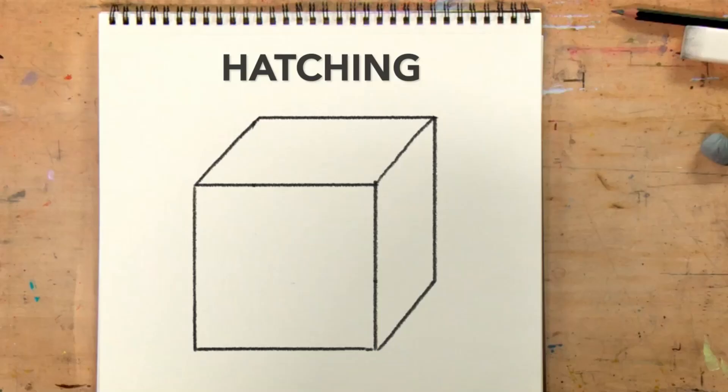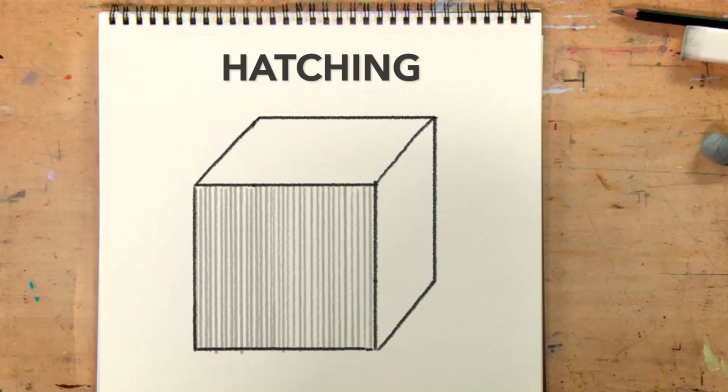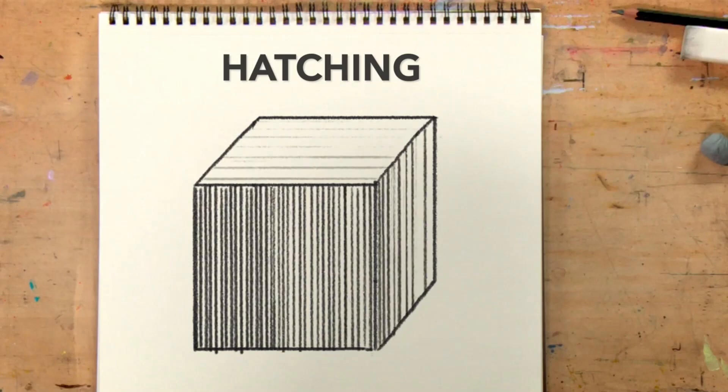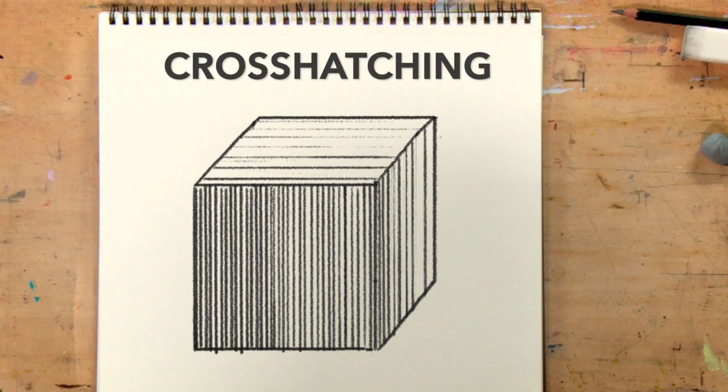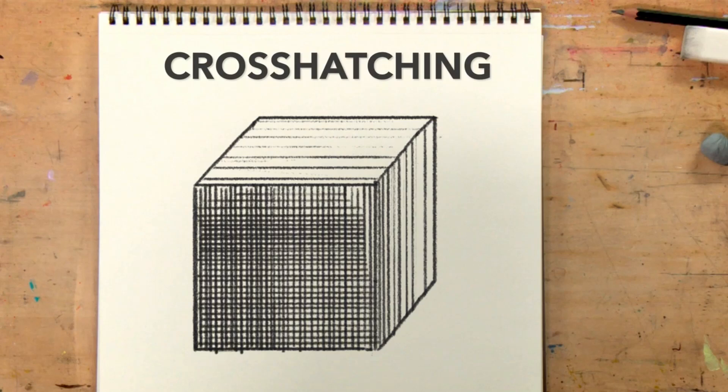Let's start by looking at hatching. Hatching is created when non-crossing lines are used to indicate the value on or around an object. Cross-hatching is the layering of planes of parallel lines on top of each other in order to create a gradient or texture in a drawing.